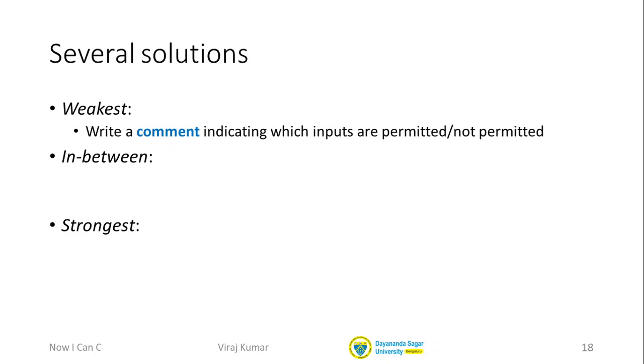For example, for our power function, if we don't want someone to call it with x being zero, we can put what is called a comment. And here is how we write a comment. Any single line that starts with slash slash is ignored by the compiler and it's treated like a comment from one human being to another. And this comment just simply says that x must be non-zero. Now, of course, this is weak in the sense that just because I have put a comment, that's not actually going to stop anyone from calling this function with x equal to zero.